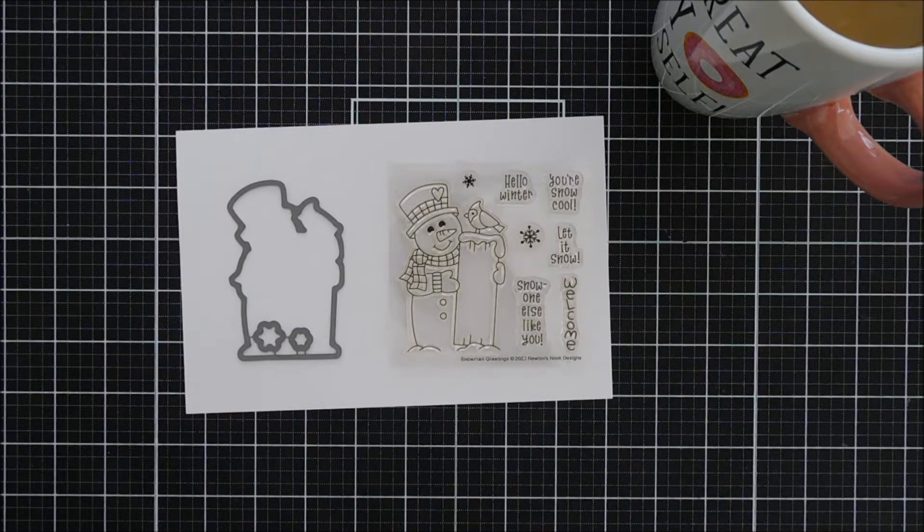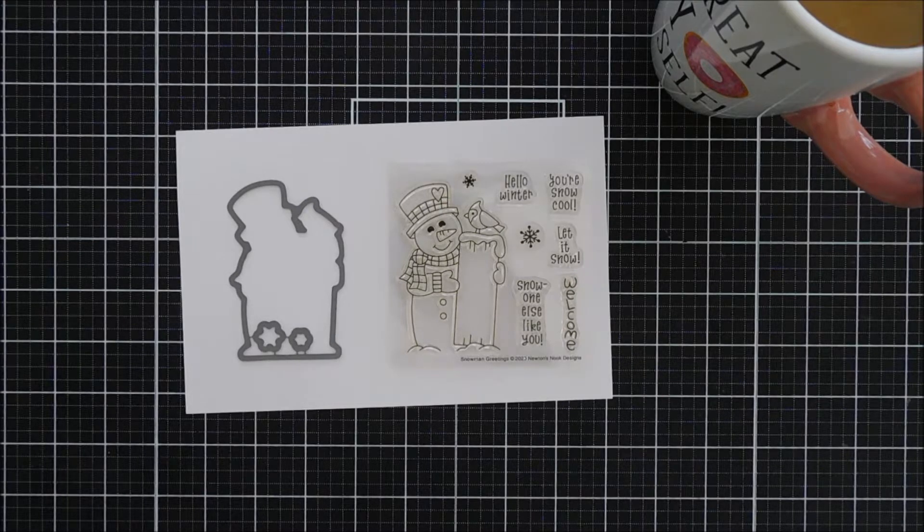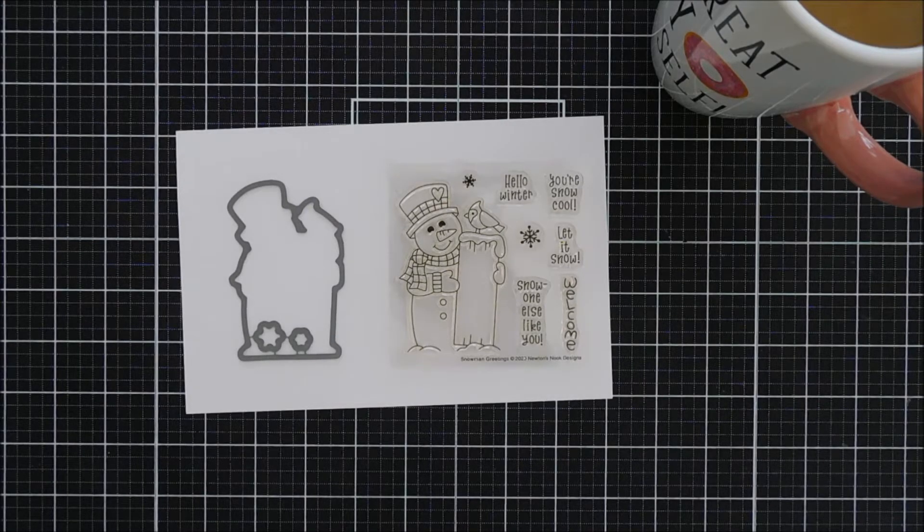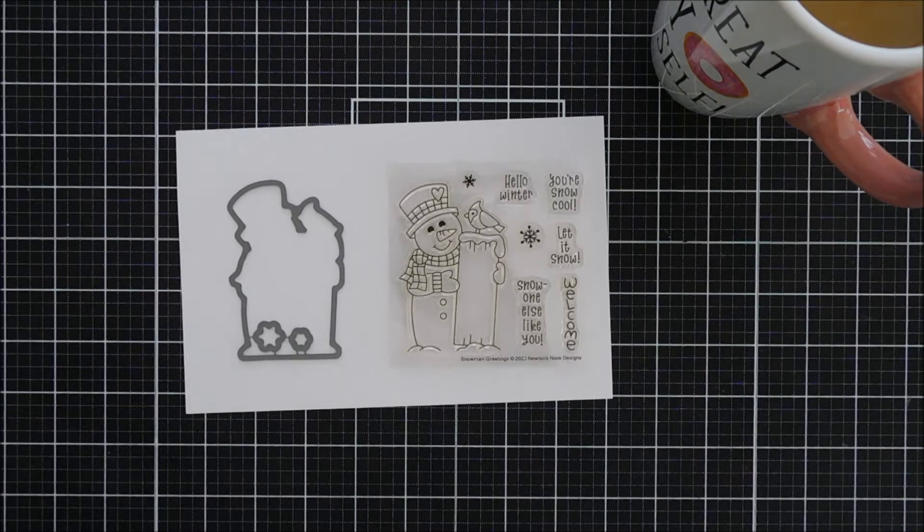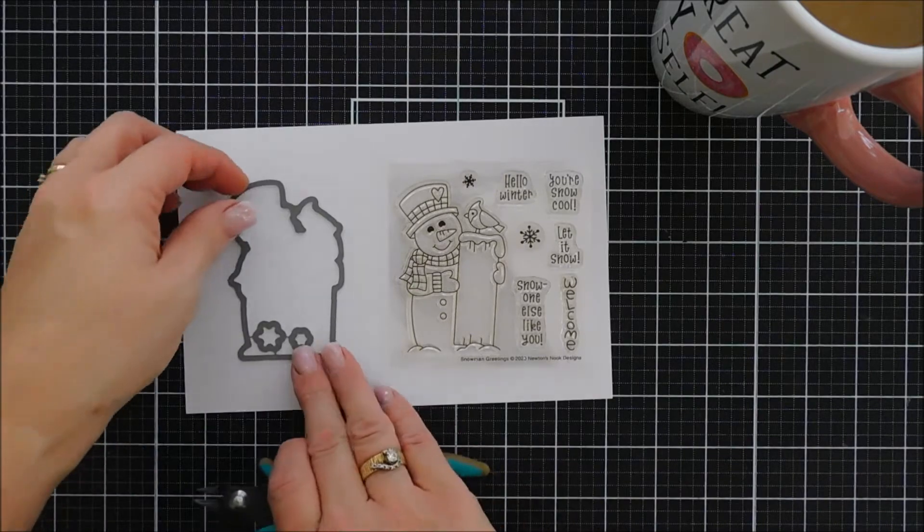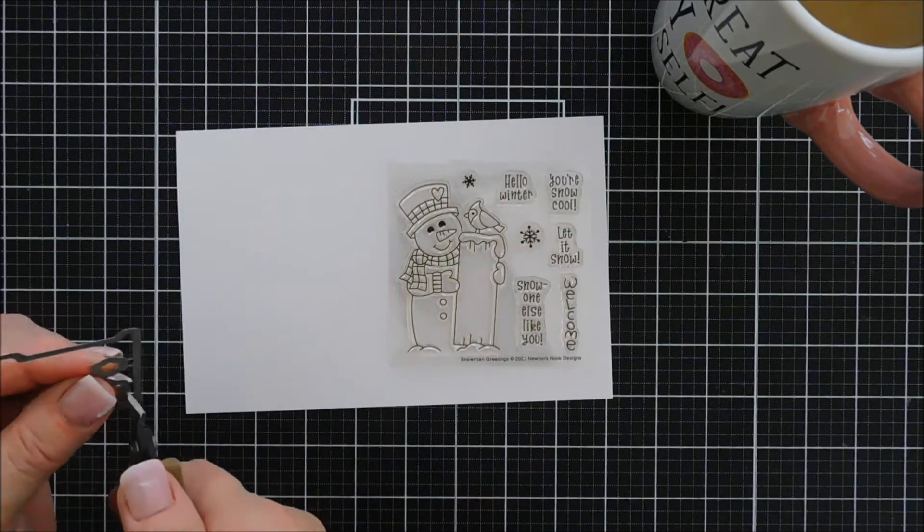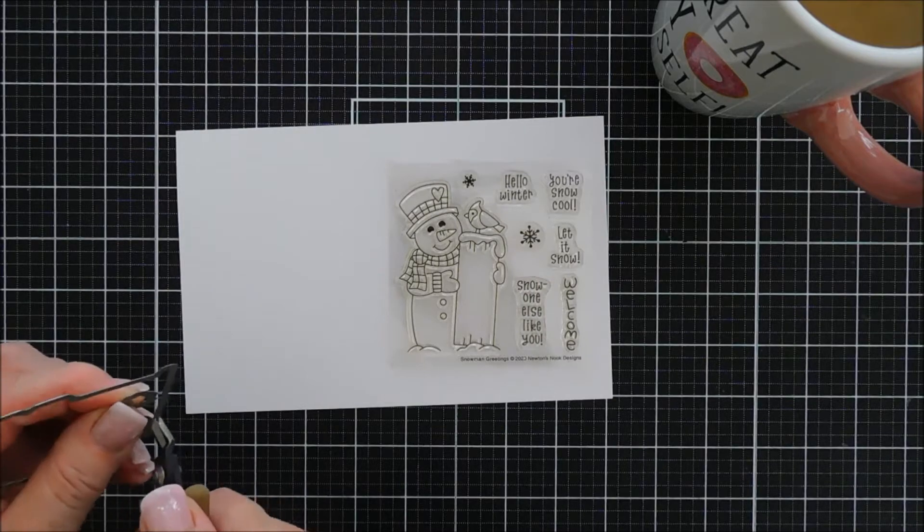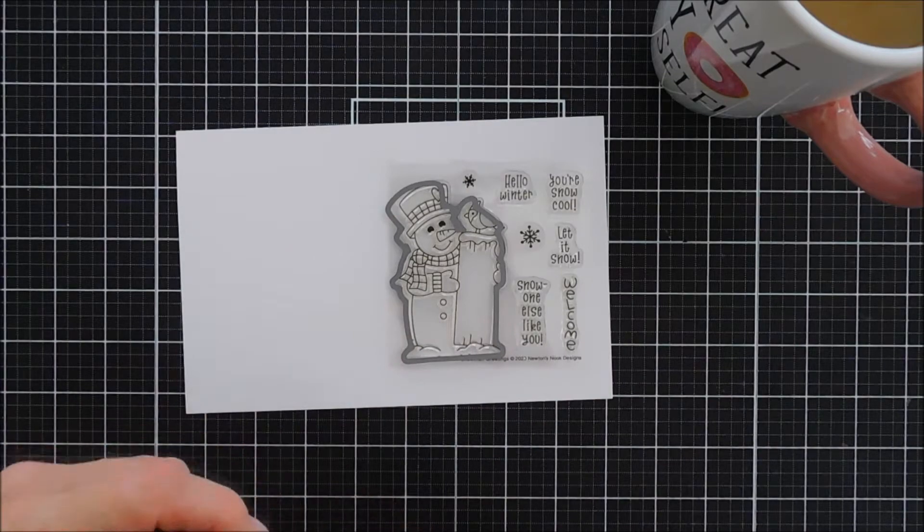This is so cute. It has a snowman and then it has a plaque and then there's sentiments that will fit inside that little wood plaque that he's holding. There's sentiments that say no one else like you, Welcome, Let it snow, Here's Snow Cool and Hello Winter. The coordinating dies are available also. It'll cut out the main image and then both the snowflakes.